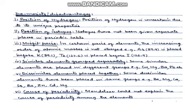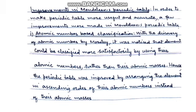Paanchwa demerit: cause of periodicity ko explain nahi kar saka. Summary mein: position of hydrogen justify nahi, position of isotopes mein confusion hai, misfit pairs maujood hain, similar elements alag alag rakhe hain, dissimilar elements ikatthe rakhe hain, aur periodicity yaani repetition of properties ki proper wajah nahi bata saka. Bada scientist tha, lekin phir bhi kai jagahon par ruk gaya.